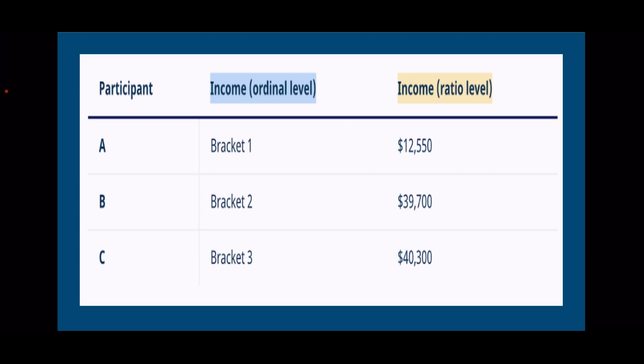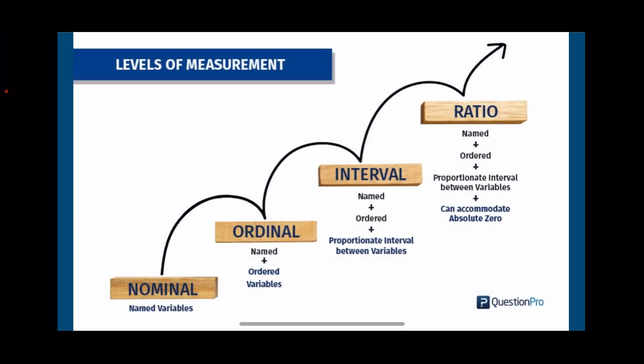Between the two given scales or levels, the ratio level gives deeper and more meaningful analysis compared to ordinal. Again, there are four levels of measurement. The first level is nominal — name variables. The next level is ordinal — with name and ordered variables. Next is interval — name, ordered, and proportionate interval between variables. And last, the highest level of measurement is ratio — name, ordered, proportionate interval between variables, and can accommodate an absolute zero.